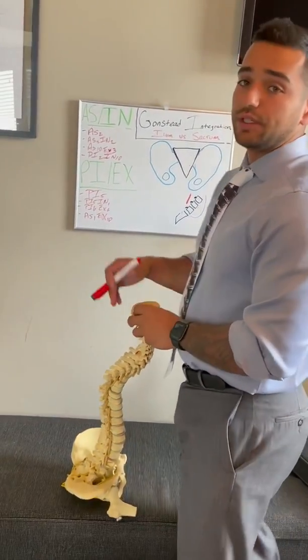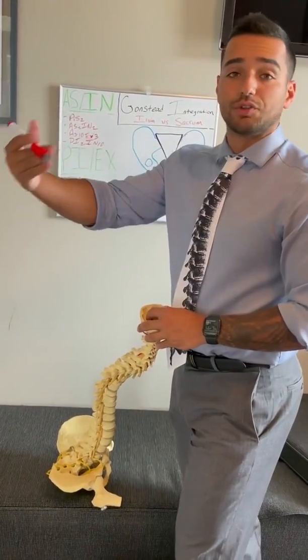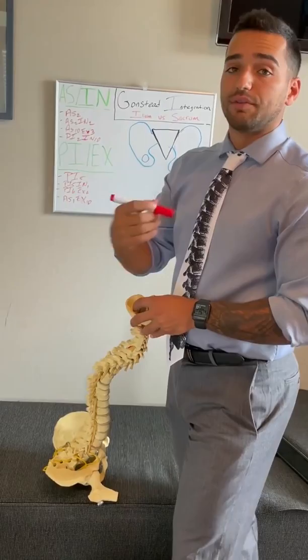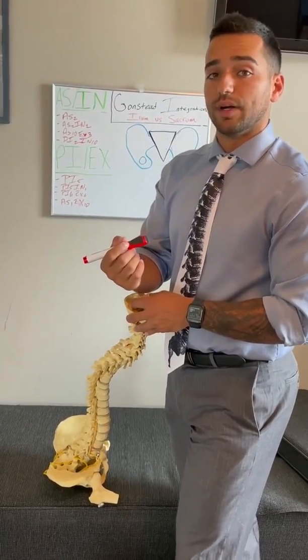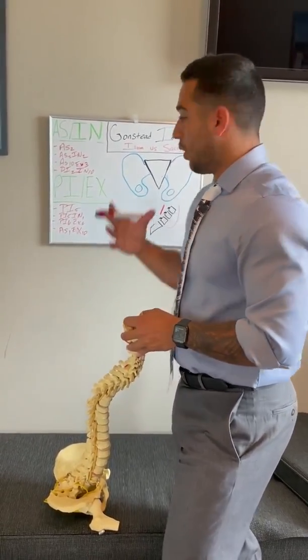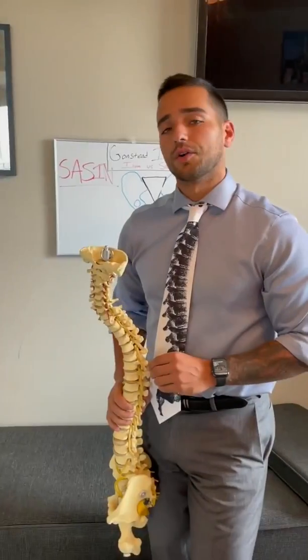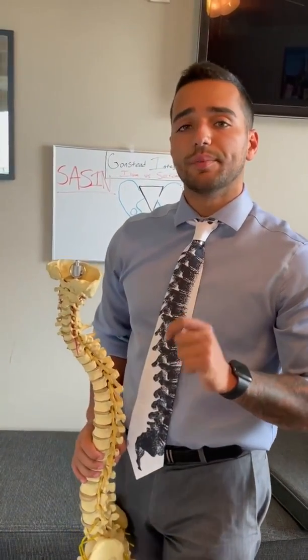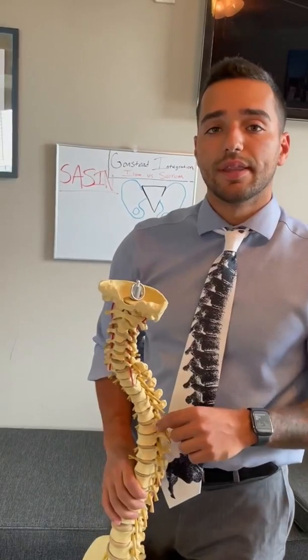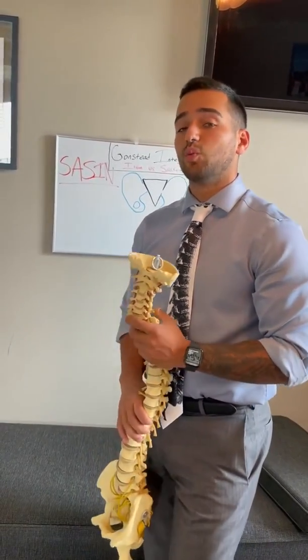That's why we can use lordosis as another way to help us as we draw our lines. We have a very specific line analysis that we use as well. All of these can combine to help tell you what is going on with the patient's pelvis. Now we're going to go into a very big topic in the Gonstead world: knowing when to adjust the ilium versus the sacrum.